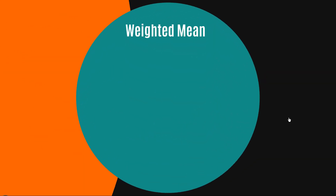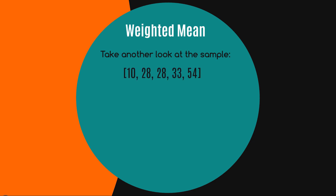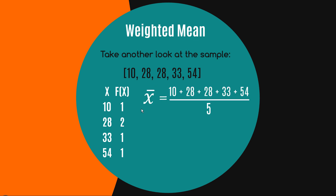Let's take another look at the sample we just used: 10, 28, 28, 33, and 54. Another way of describing this data set is to put it into a table form, with x in one column — the values 10, 28, 33, and 54 — and then f(x), the frequency of x, in a second column: 1, 2, 1, and 1. The sum of all frequencies equals five, the number of observations.